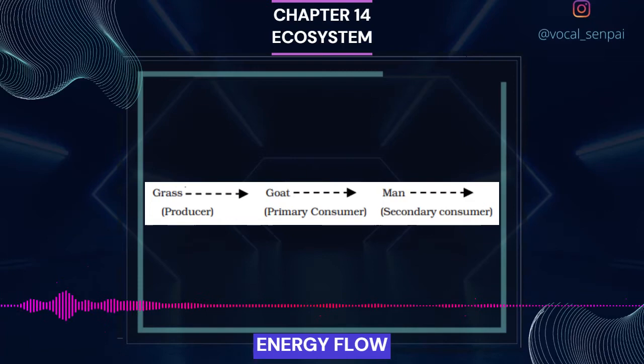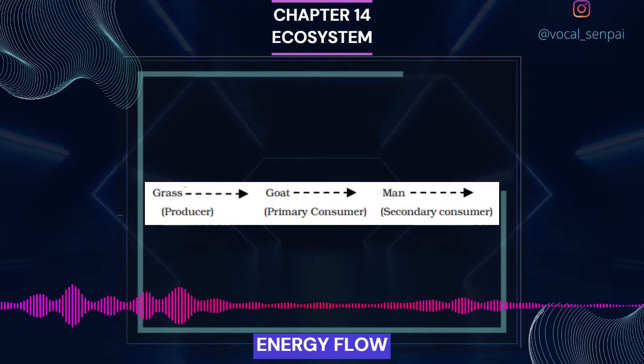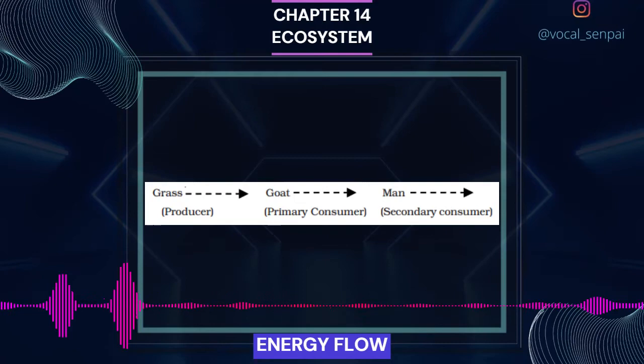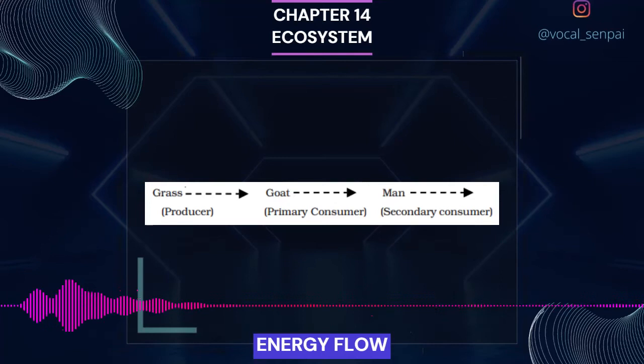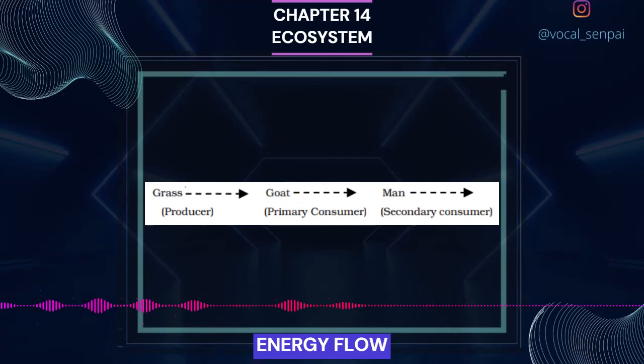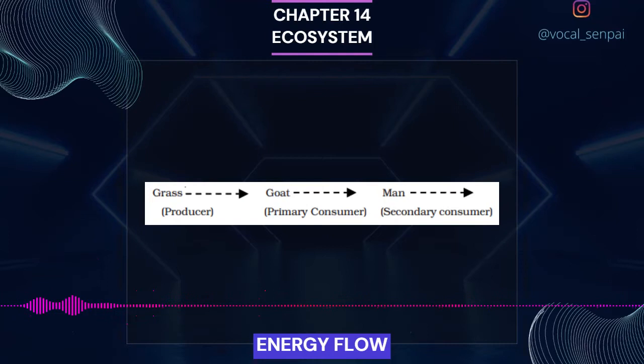If they feed on the producers, the plants, they are called primary consumers, and if the animals eat other animals which in turn eat the plants or their produce, they are called secondary consumers. Likewise, you could have tertiary consumers too. Obviously, the primary consumers will be herbivores. Some common herbivores are insects, birds and mammals in terrestrial ecosystems and mollusks in aquatic ecosystems. The consumers that feed on these herbivores are carnivores, or more correctly primary carnivores, those secondary consumers. Those animals that depend on the primary carnivores for food are labeled secondary carnivores.